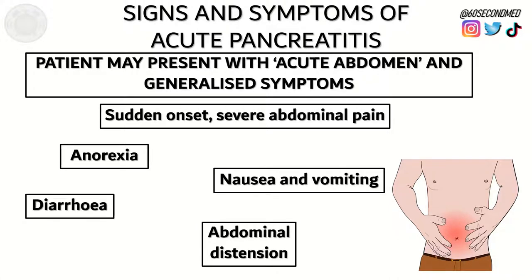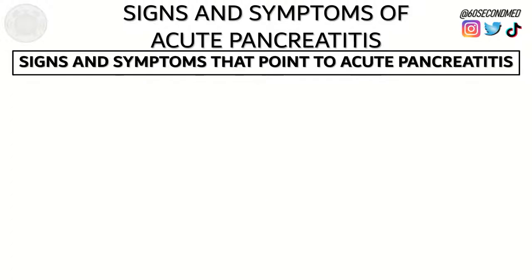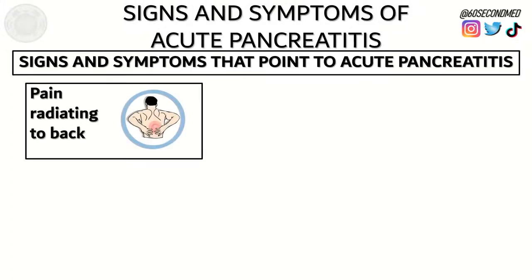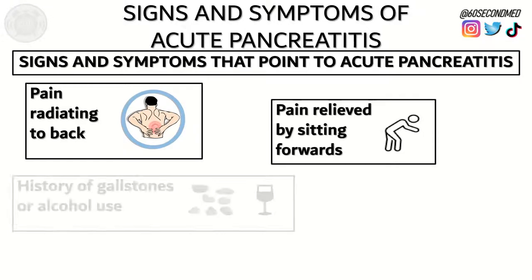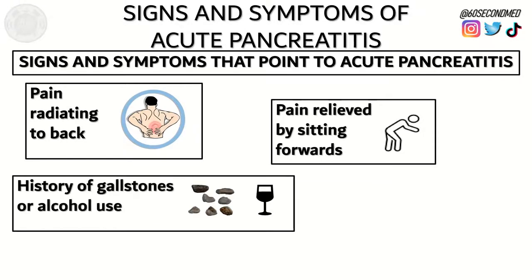So how can we differentiate other causes of an acute abdomen from acute pancreatitis? The following signs and symptoms point more to acute pancreatitis: pain radiating to the back, pain relief by sitting forwards, a history of gallstones or alcohol use, and also jaundice if there's biliary obstruction associated with the pancreatitis.